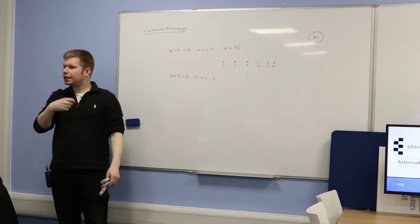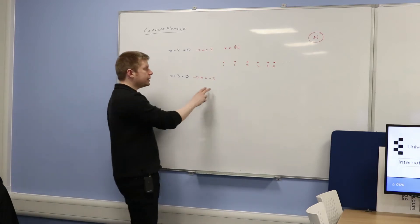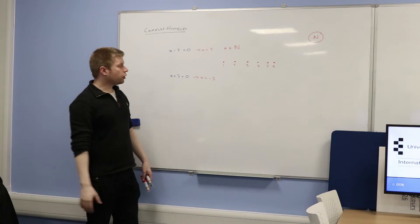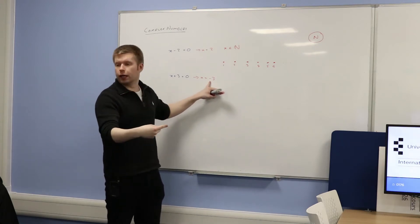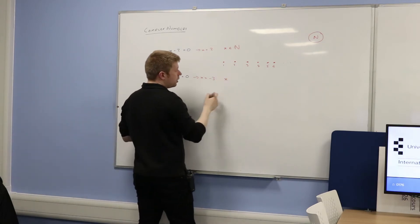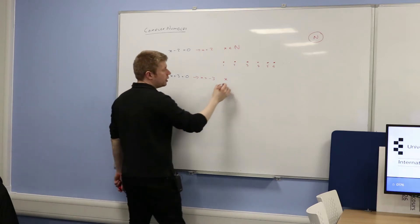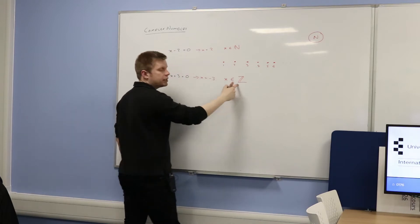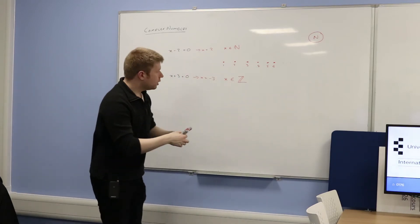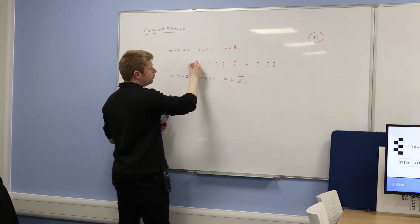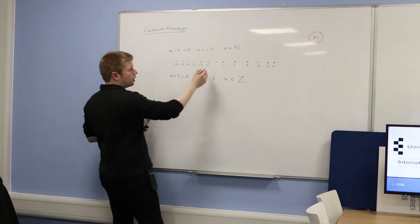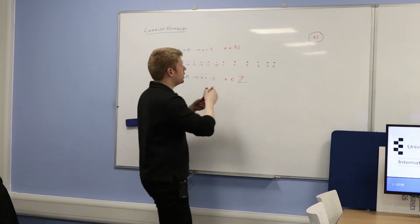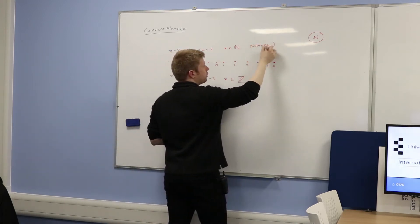Does anybody know where the negative numbers came from? They came from the idea of debt — debt means you owe somebody something. For example, if you had £5 but bought an item worth £8, you used £3 that wasn't your money, so you're in debt by £3. So we extend this to mean the integers. x is an element of Z — Z means 'Zahl', the German word for whole.